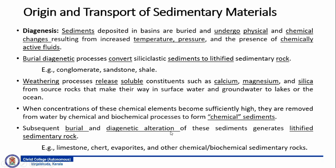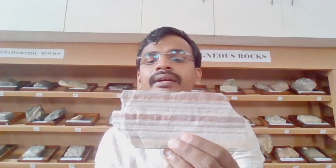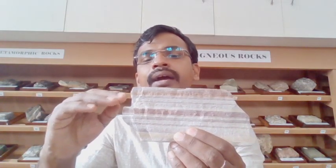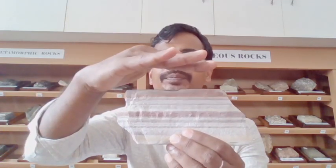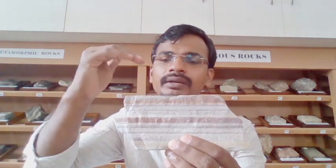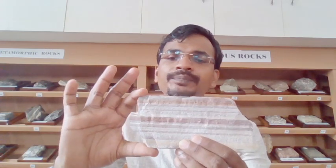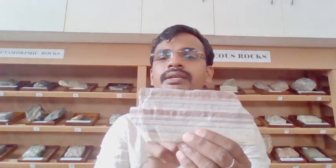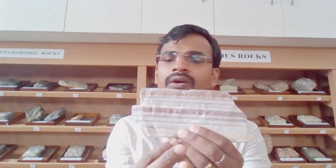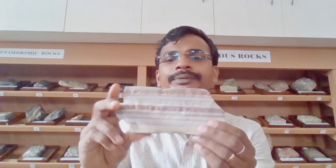Examples include conglomerate, sandstone and shale. Now let me show you a rock called shale. Here the clastic particles are very fine and it deposited layer by layer, and it got compressed under higher pressure. Over a period of time, because of the physical and chemical changes, it solidified to form as a solid rock. Each line that you see in this rock is basically deposited as a layer to form a rock called shale.